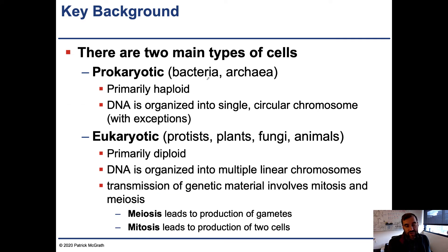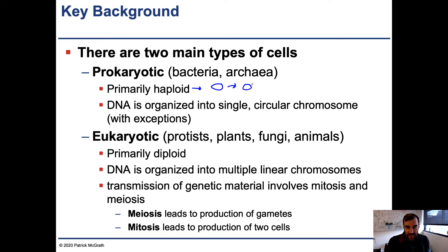There are two main types of cells: prokaryotic and eukaryotic. Prokaryotic cells are bacteria and archaea, and these are primarily haploid. Haploid means there is a single copy of each chromosome within the cell — this is because one bacterium replicates into two daughter cells, each with a single parent. Typically DNA in prokaryotes is organized into a single circular chromosome that contains all of the DNA.